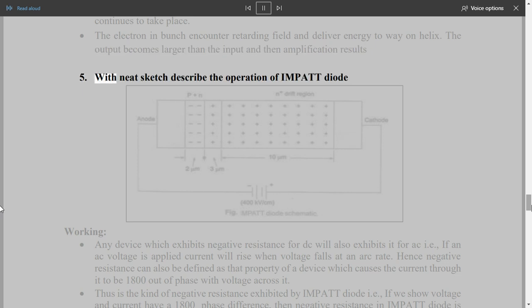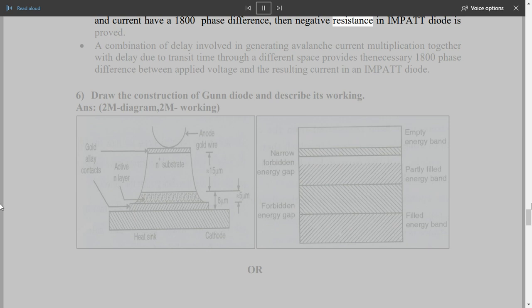This produces an axial electric field that lags behind original electric field by lambda-slash-4. Bunching continues to take place. The electron in bunch encounter retarding field and deliver energy to wave on helix. The output becomes larger than the input and then amplification results. 5. With neat sketch describe the operation of IMPATT diode. Working: Any device which exhibits negative resistance for DC will also exhibits it for AC. If an AC voltage is applied current will rise when voltage falls at an arc rate. Hence negative resistance can also be defined as that property of a device which causes the current through it to be 180 degrees out of phase with voltage across it. Thus is the kind of negative resistance exhibited by IMPATT diode. If we show voltage and current have a 180 degrees phase difference then negative resistance in IMPATT diode is proved.